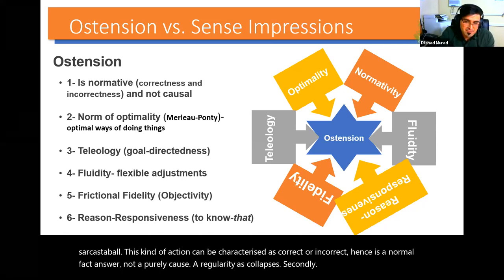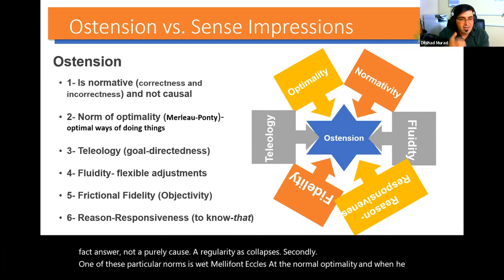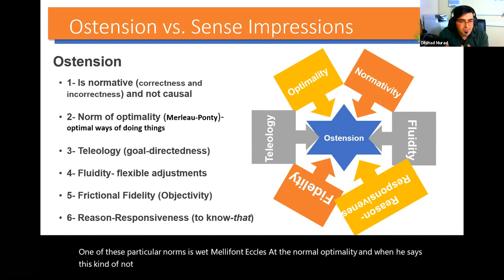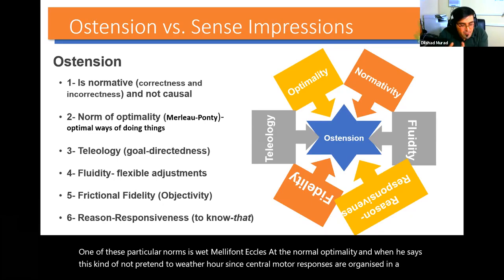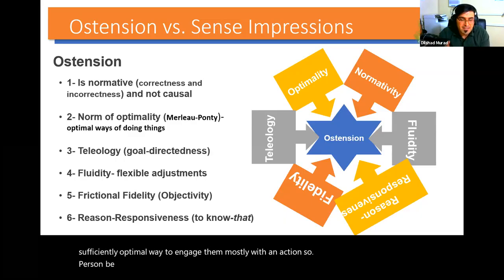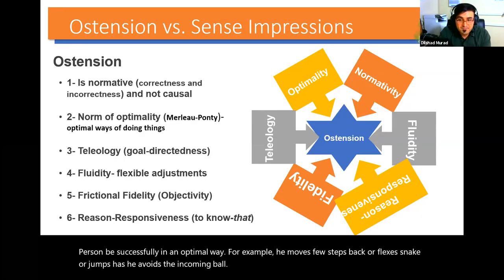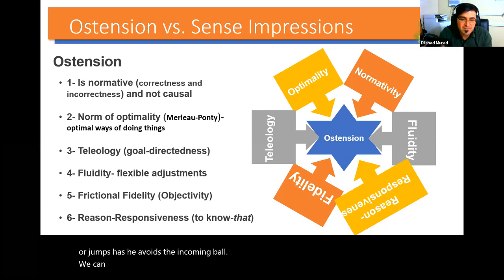Secondly, one of these particular norms is what Merleau-Ponty calls the norm of optimality. He says this kind of norm pertains to whether our sensory-motor responses are organized in a sufficiently optimal way to engage smoothly with an action. So if person B successfully and optimally moves a few steps back, flexes his neck, or jumps — hence avoiding the incoming ball — we can call his act optimal or correct. Therefore it is not a purely causal regularity, as Carnap says.